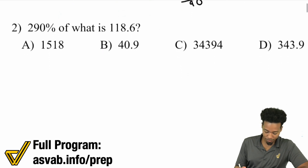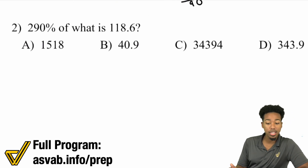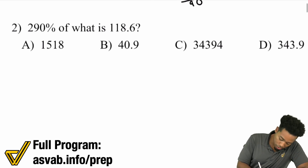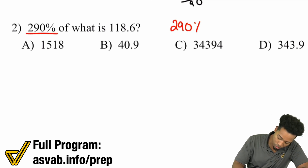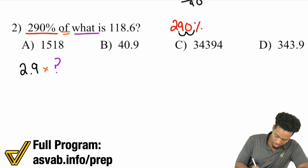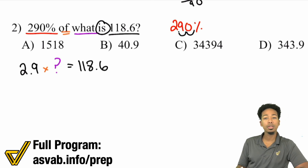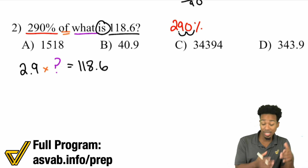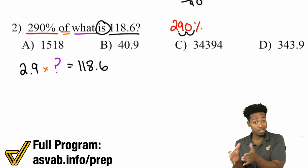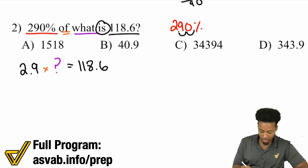Let's try a number bigger than 100. 290% of what is 118.6? Take 290% and turn it into a decimal — move the decimal to the left two times — so you get 2.9. 'Of' means multiply, so 2.9 times some question mark equals 118.6. Working forward, you'd multiply 2.9 by some number to get 118.6. To work backwards and find the original, divide both sides by 2.9.